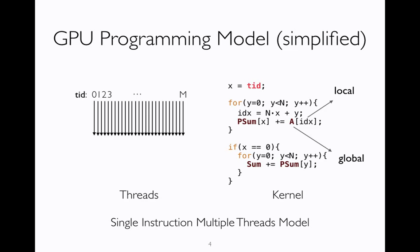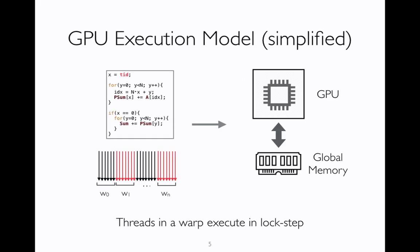Finally, the threads are subdivided into groups of 32 threads known as warps. Now let's understand the execution model. The GPU takes the kernel and the set of warps and executes the instructions in the kernel for each warp. An important point to note is that the unit of execution is warp and not thread, and all threads within a warp execute in lockstep.